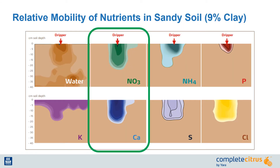Here is a visual demonstrating the relative mobility of nutrients when applied by fertigation to sandy soil. Ammoniacal nitrogen and potassium are positively charged ions, and so they can be absorbed by the negative charges of clay particles. This limits mobility in the wetted zone.